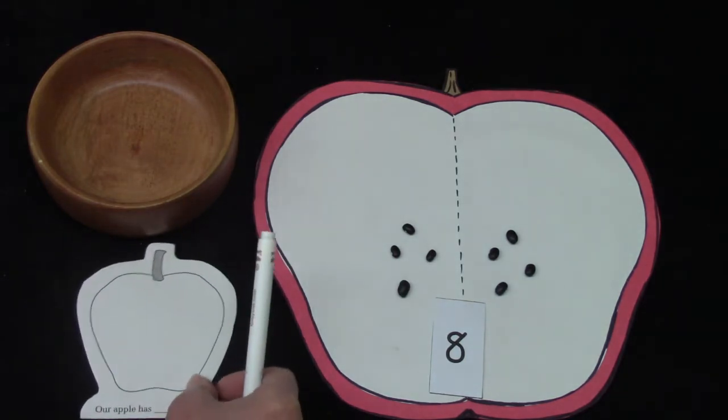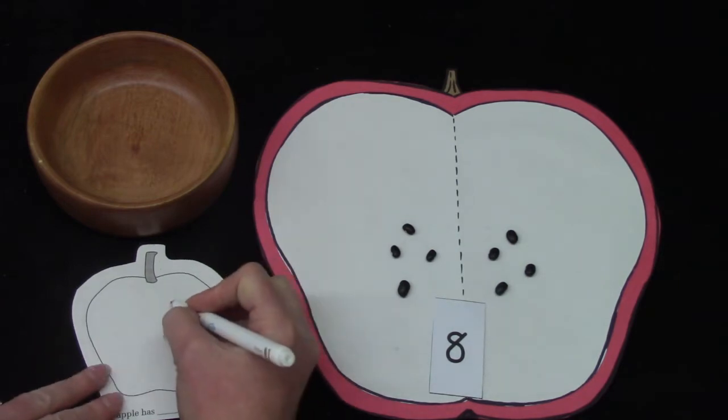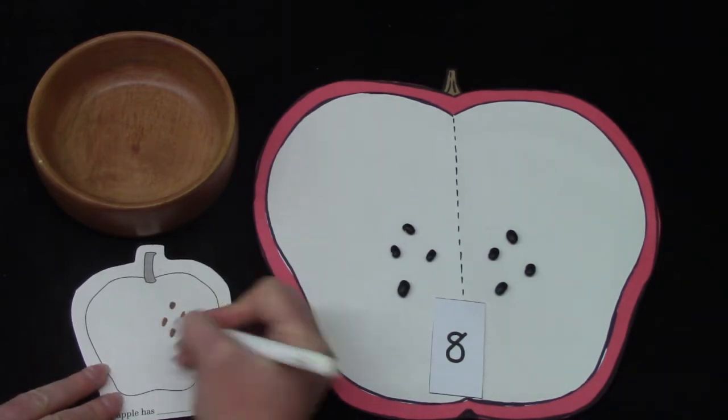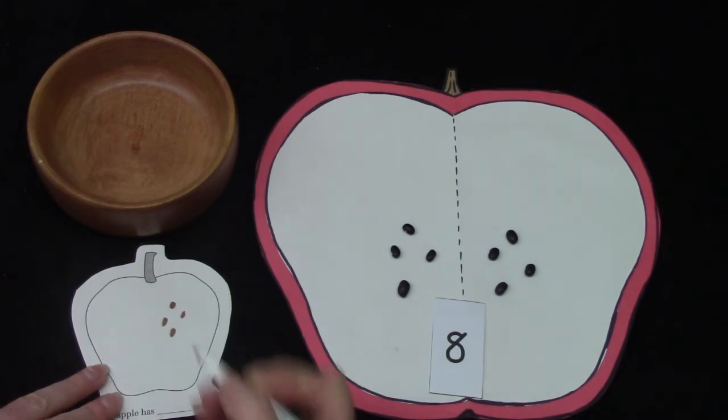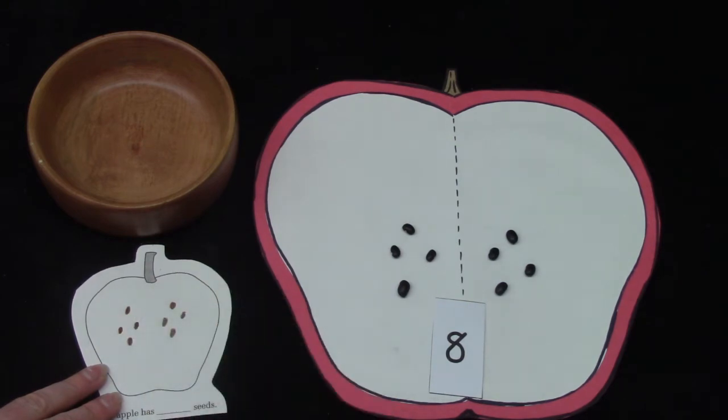Well we're going to draw that on our little apple. I am going to draw one, two, three, four seeds, and then I'm going to draw one, two, three, four more.